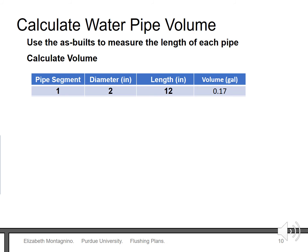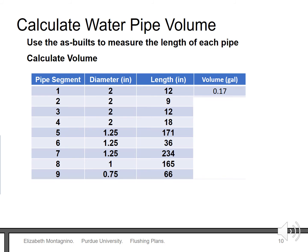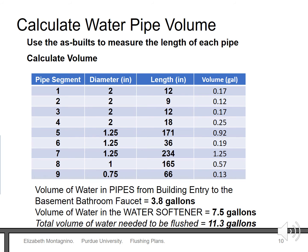We must do this calculation for all pipe segments. Each segment can have a different water volume because each pipe has a different diameter or length. Once we have calculated all the water volume from the building entry point to the faucet we can add those numbers up. Here we found 3.8 gallons of water sits in pipes between a faucet and where water enters the building. But there is a water tank we missed — all water passes through this 7.5-gallon tank once it enters the building. So in order to replace all the water between the faucet and building entry, we need to remove 11.3 gallons of water.